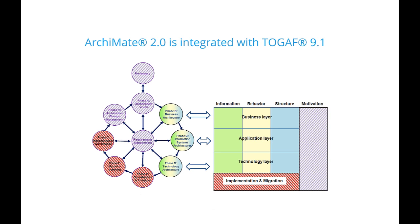Archimate 2 is also strongly integrated with TOGAF 9.1, and that's going to increase in the future. On the left here we have a picture of the TOGAF architecture development method, and we can see that it is mapped to the Archimate content metamodel. In Archimate we have business, application, and technology layers, and these capture phases B, C, and D in the architecture development method in TOGAF.